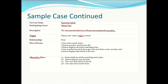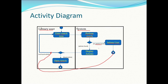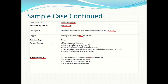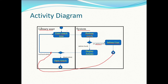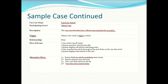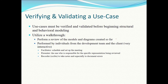The alternative flow covers when there is no article found: the system informs the user that no article was found, and the user can modify the search and try again. This is how we write the use case description. We take a use case, draw the activity diagram, and then writing the use case description becomes easy — you can see it is simple and straightforward from the activity diagram.